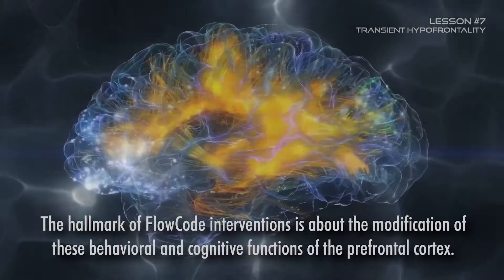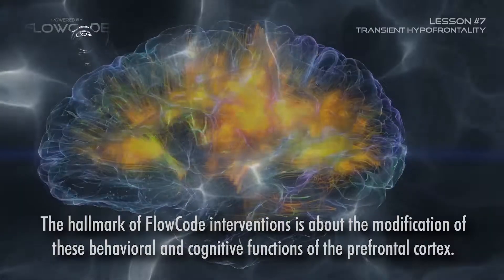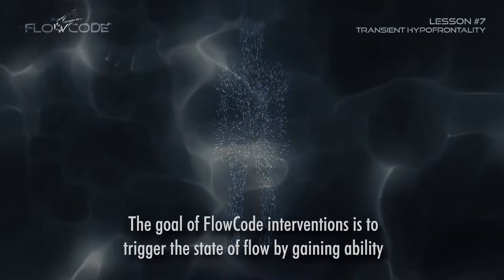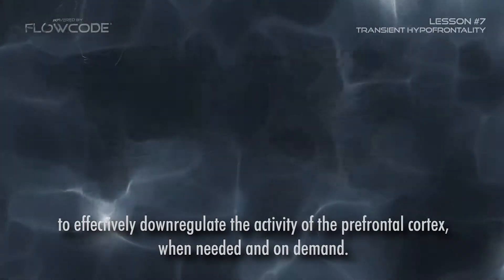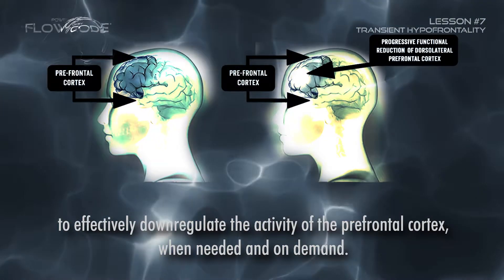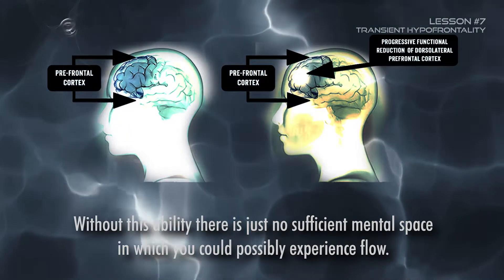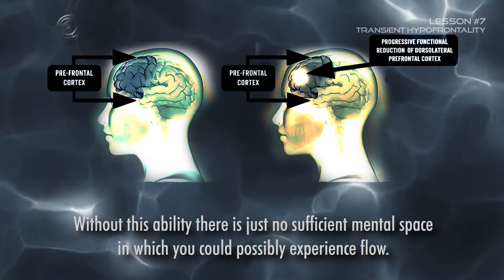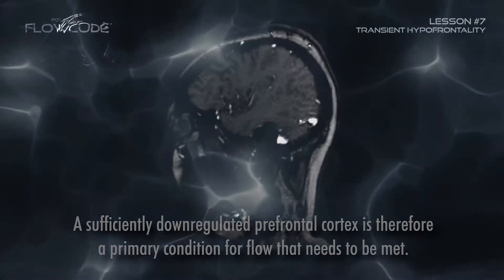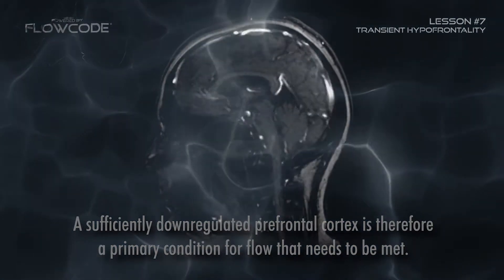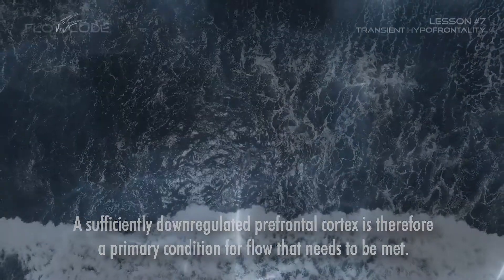The hallmark of Flow Code interventions is the modification of the behavioral and cognitive functions of the prefrontal cortex. The goal of Flow Code interventions is to trigger the state of flow by gaining the ability to effectively down-regulate the activity of the prefrontal cortex when needed and on demand. Without this ability, there is simply no sufficient mental space in which you could possibly experience flow. A sufficiently down-regulated prefrontal cortex is therefore a primary condition for flow that needs to be met.